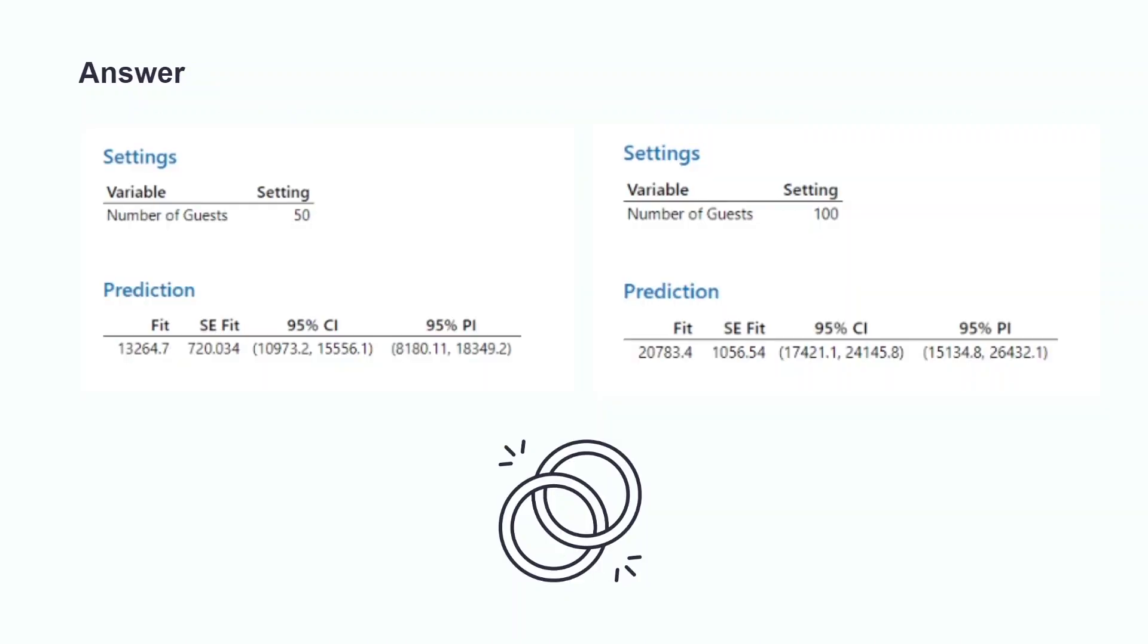Because Joshua and Melissa want to know the average cost of all weddings with 50 and 100 people, they should use a confidence interval. According to the Minitab output, they can be 95% confident that a wedding with 50 people will cost between $10,973.20 and $15,556.10, and a wedding with 100 people will cost between $17,421.10 and $24,145.80. Makes sense.